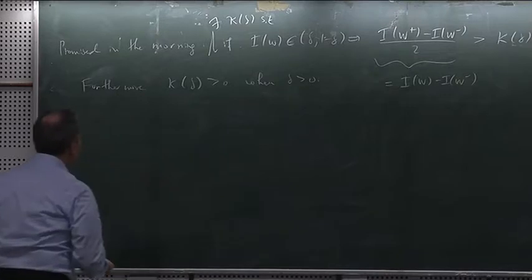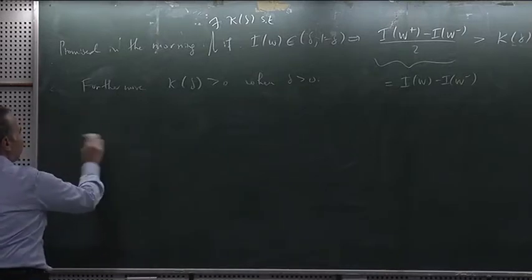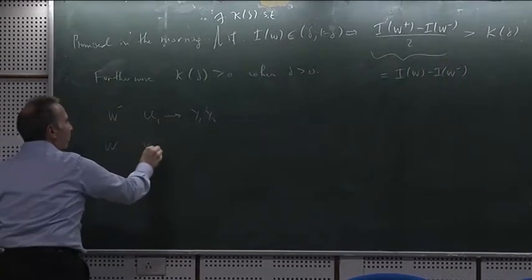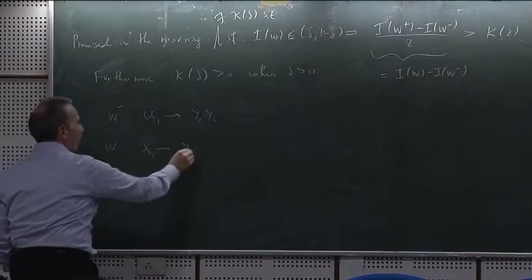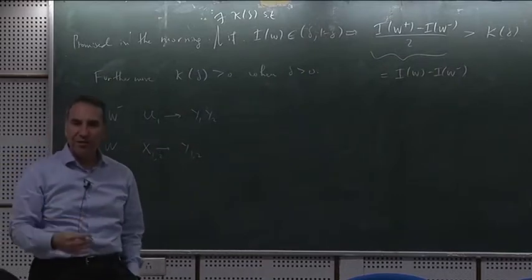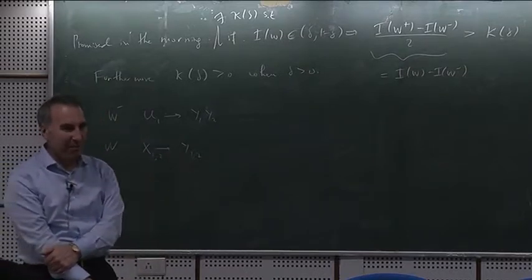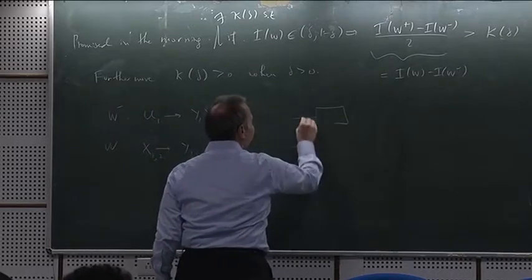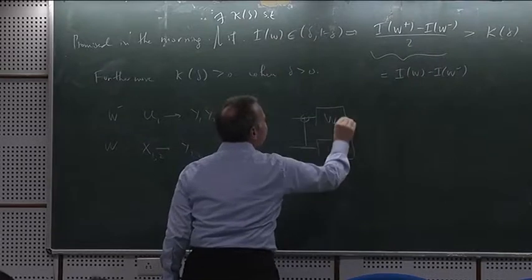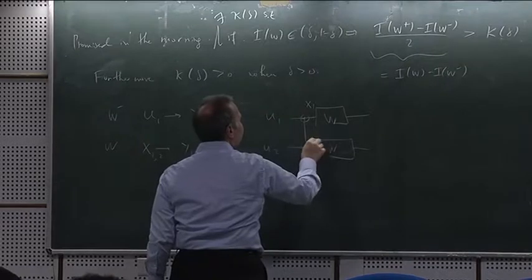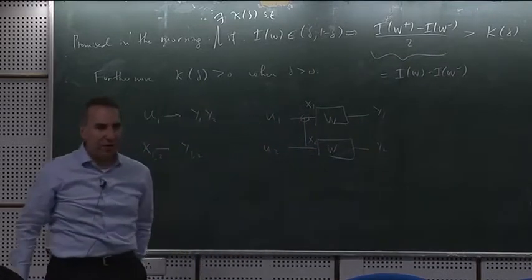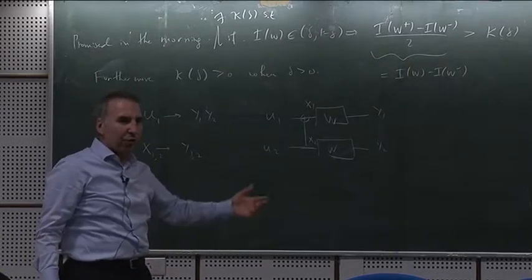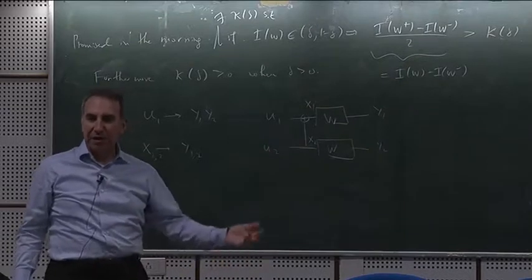We recall the picture of W minus. This W minus was a channel between U1 and Y1, Y2, whereas W was a channel between X and Y — either X1 to Y1 or X2 to Y2, the same thing. And we recall that U1, U2 were fair and independent coin flips, consequently X1 and X2 were also independent and fair coin flips.